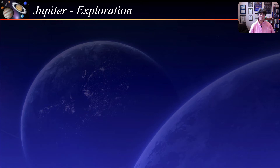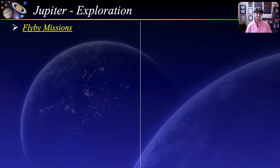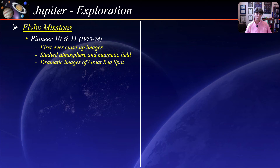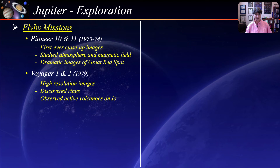Many spacecraft have gone to Jupiter. The first were Pioneer 10 and 11 in the early 1970s, obtaining the first ever close-up images of Jupiter and the Galilean satellites, studying its atmosphere, detecting a magnetic field, and providing the first close-up images of the Great Red Spot. The next spacecraft were Voyager 1 and 2 in the late 70s. The Voyager missions transformed our view of Jupiter, discovered the rings of Jupiter, and observed active volcanoes on Io — the first time an active volcano was observed on a celestial body other than Earth.